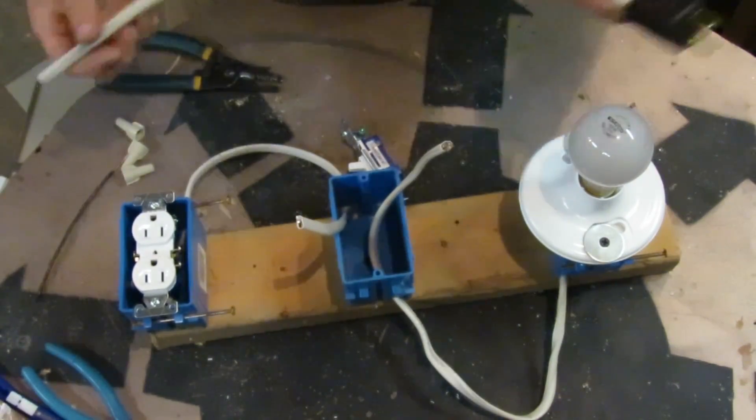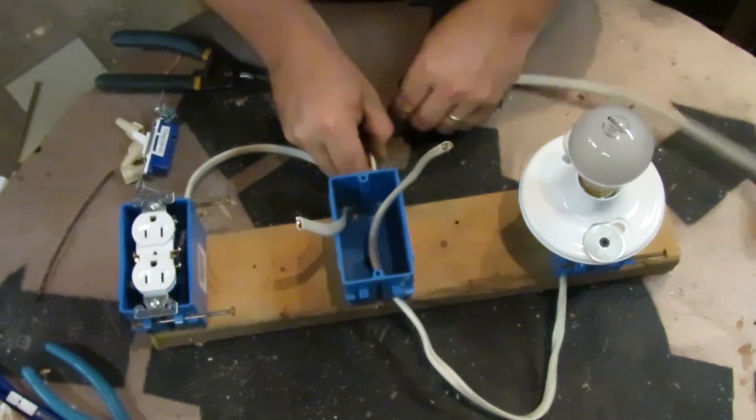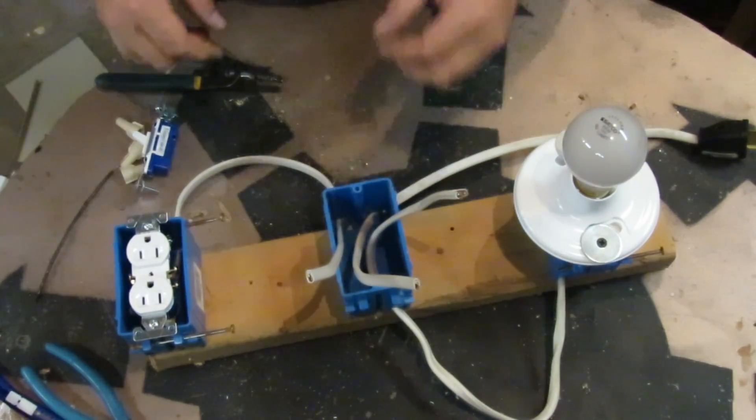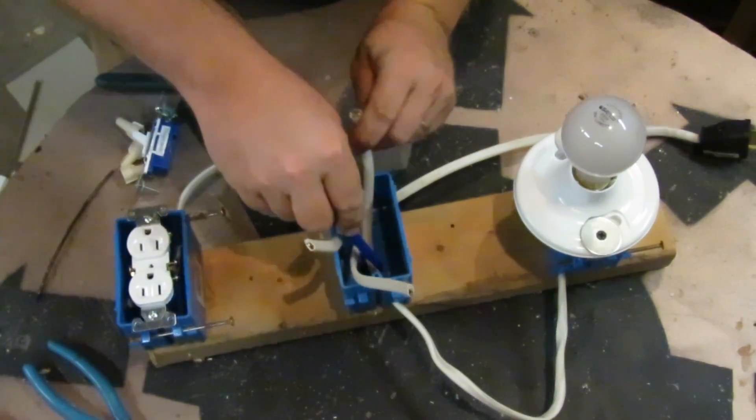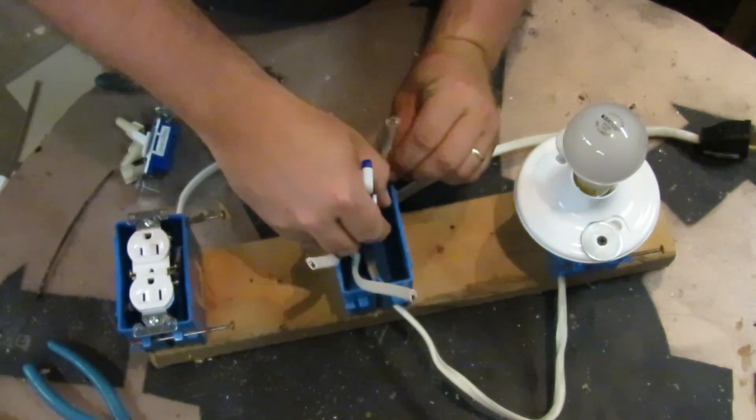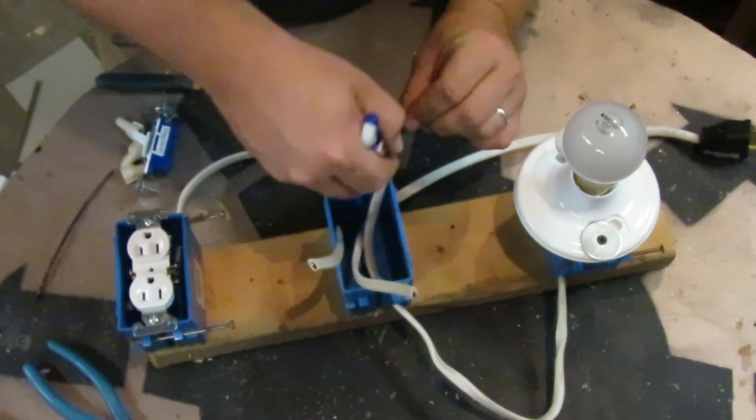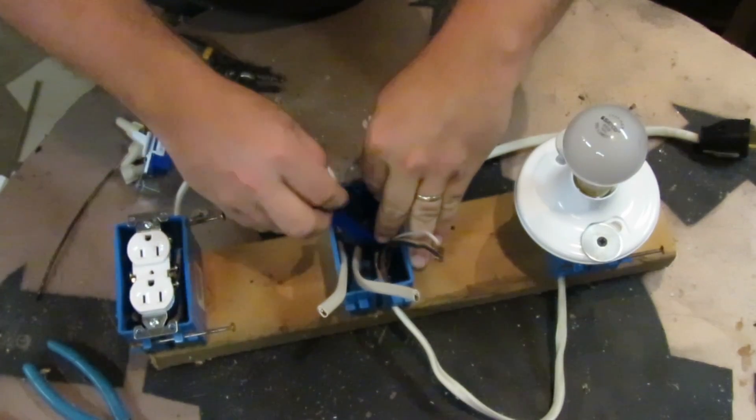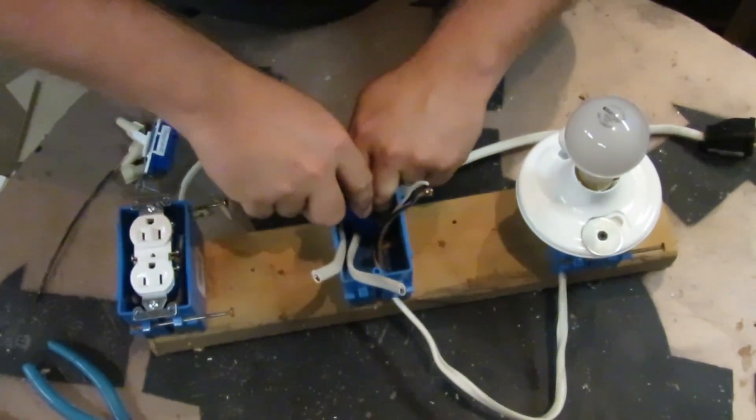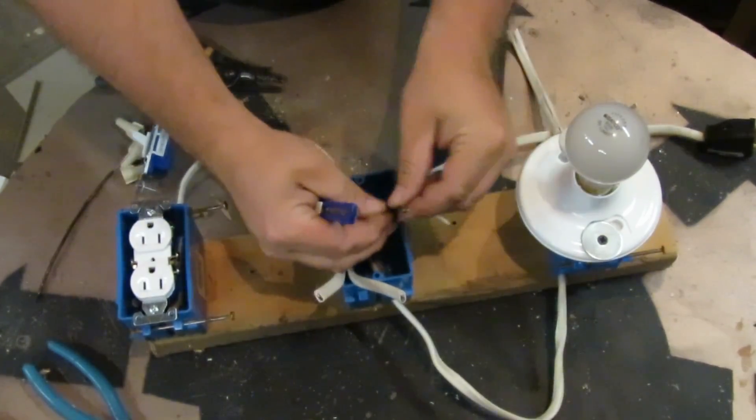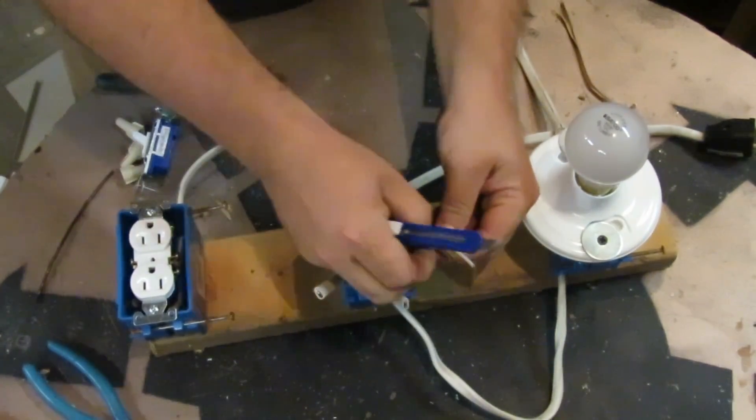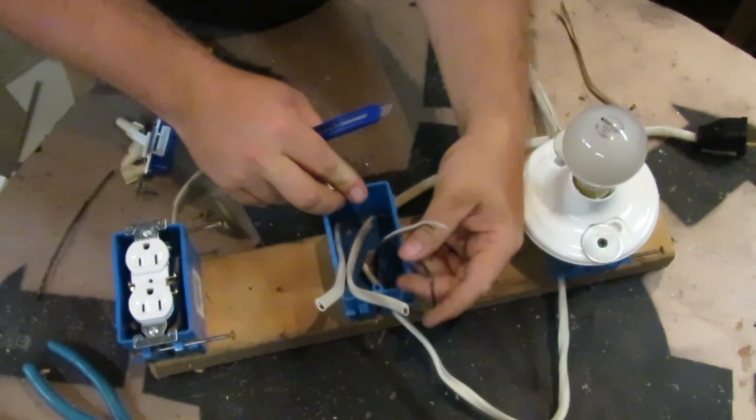You want to go about six inches or so. Just take your razor knife and strip off the coating. You just want enough to have plenty of room to work. If you make it too long, you can trim it down.